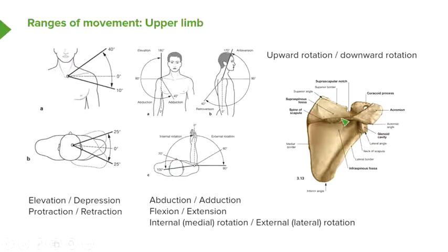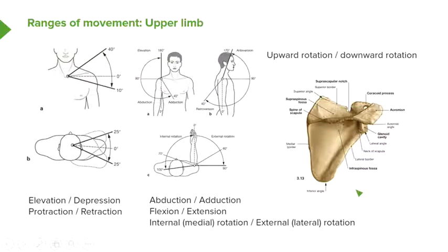Here is a picture of a scapula, which shows nicely the upward and downward rotation. In upward rotation of the scapula, the glenoid cavity is going to move upwards, pushing the inferior angle outwards. This enables the upper limb to move upwards — for example, if your right upper limb is trying to scratch your left shoulder, the glenoid cavity moves up and the inferior angle moves down. We also have downward rotation, where if you're trying to scratch your back, the glenoid cavity is depressed and the inferior angle moves outwards.